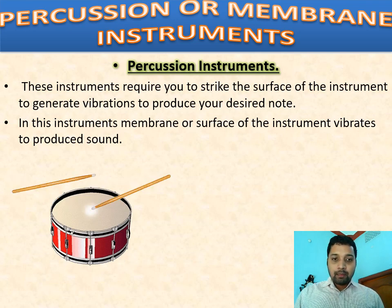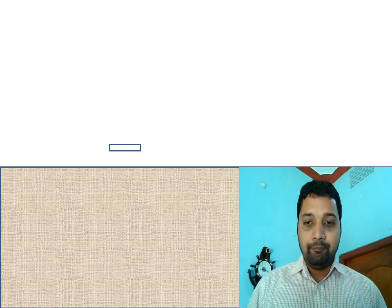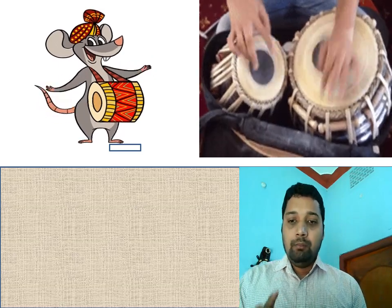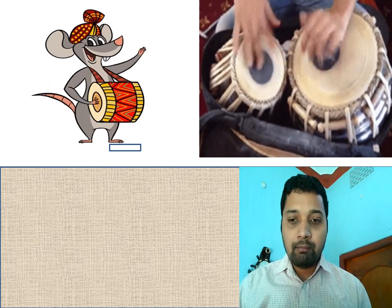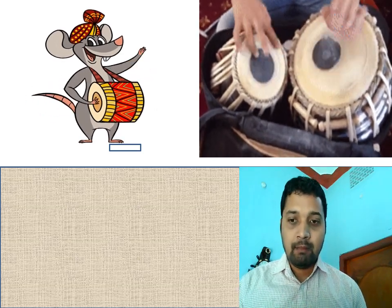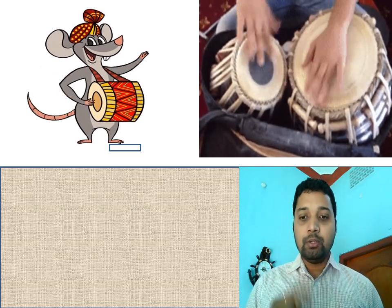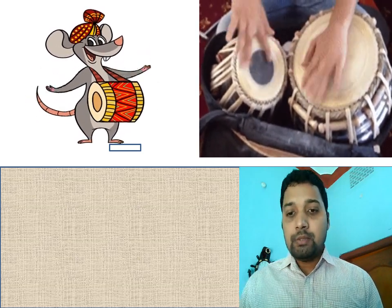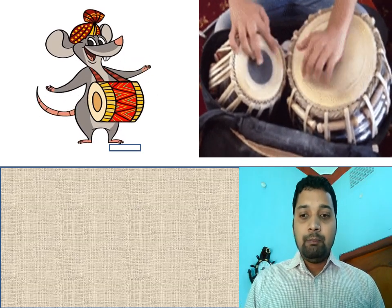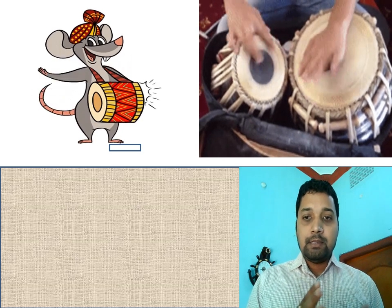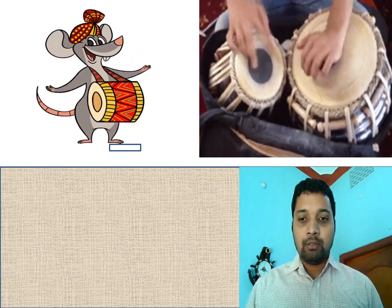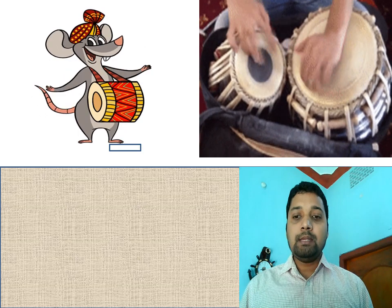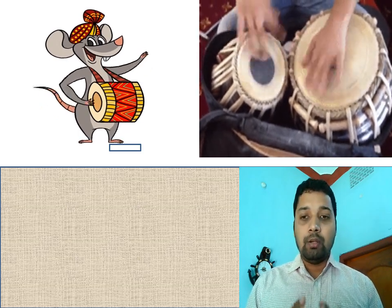There are two things to observe about percussion instruments. First is the tension — how tightly the membrane is stretched. Second is the size of the membrane. More tightly stretched, more frequency sound you get. If the surface area is more, it will produce a louder sound; if the surface area is small, it will produce sound with more pitch. So by changing the surface area and the tension, we can change the loudness and the pitch of the sound to get a musical note.